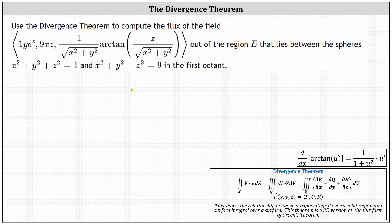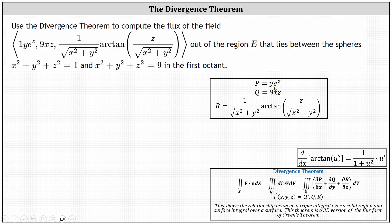Given the vector field F, we will let P equal y times e to the z, Q equal nine x z, and R equals one divided by the quantity x squared plus y squared, times the arctangent of the quotient of z and the square root of the sum of x squared and y squared.